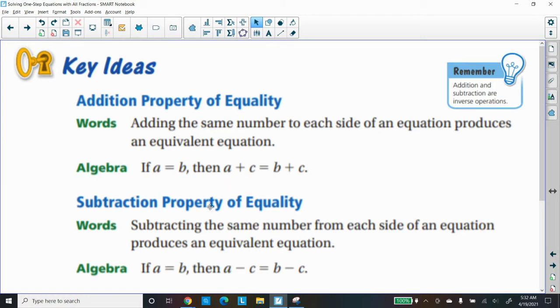There's also the subtraction property of equality, where we're subtracting the same number from each side of the equation, and it produces an equivalent equation. In algebra, we say if we have a equals to b, if we subtract c from both sides, where a minus c and b minus c, the equation will still be equivalent. Remember, addition and subtraction are inverse operations. Inverse means opposite.